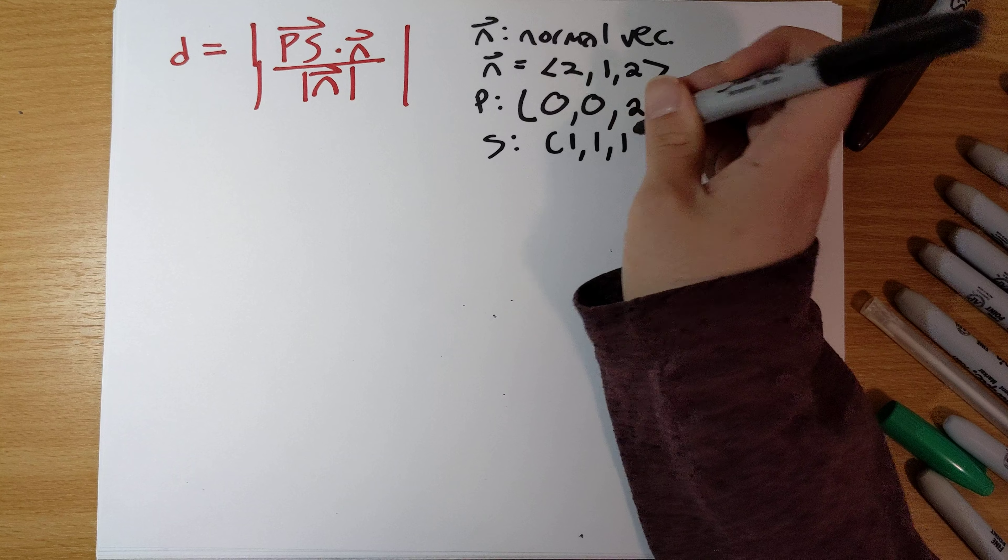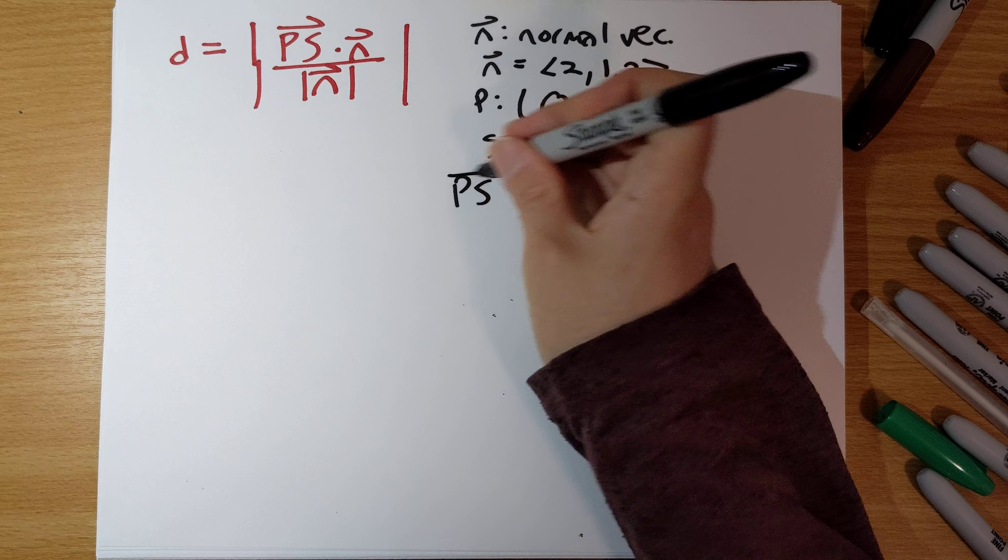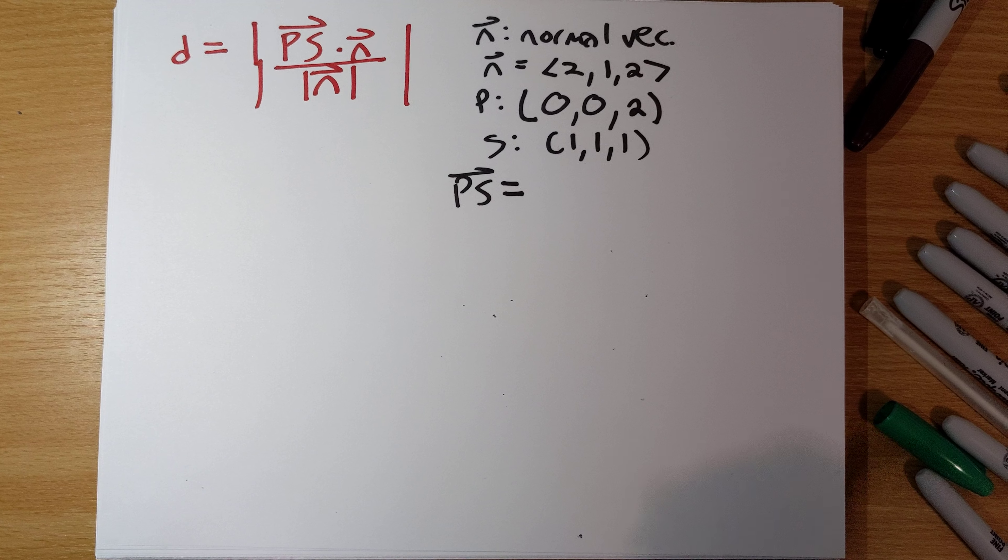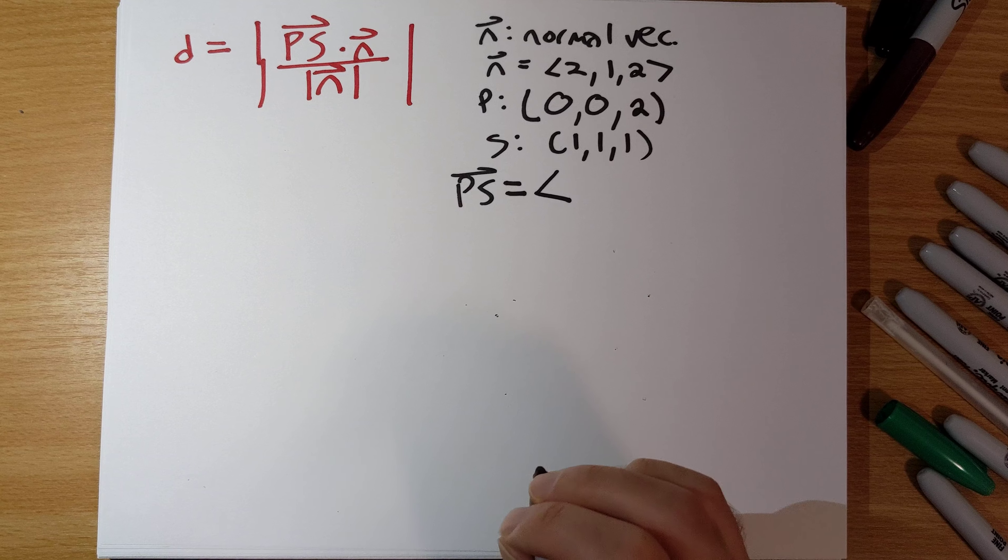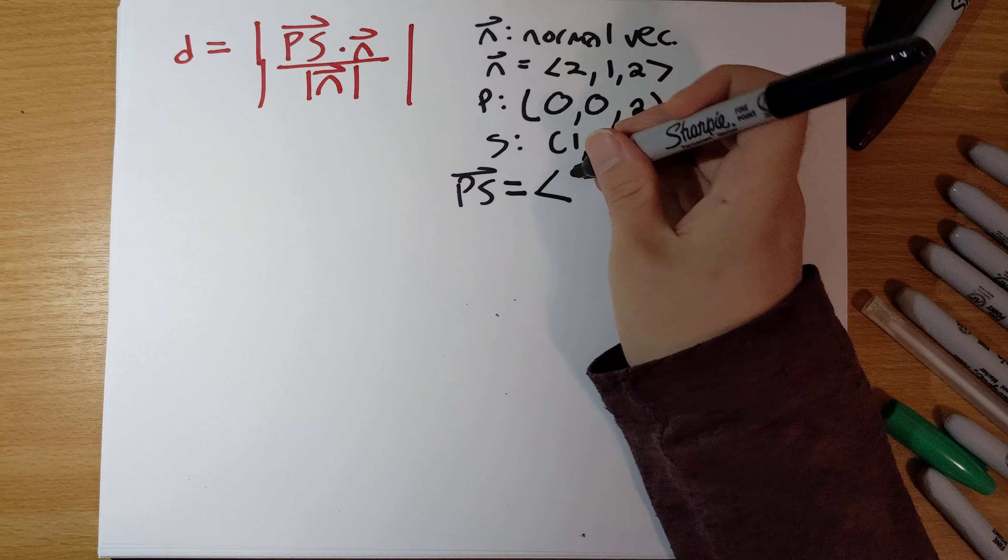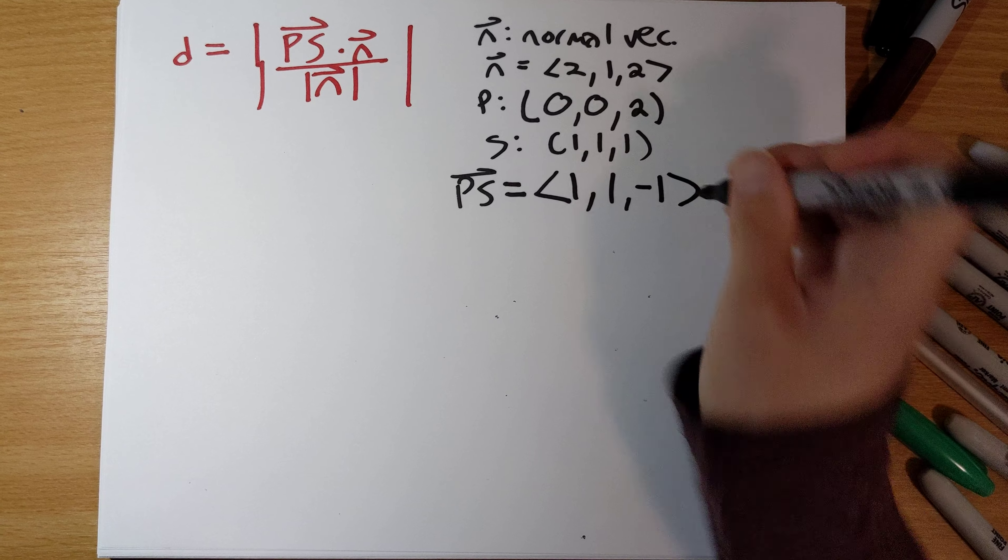Once again, s is the point 1, 1, 1. So, a vector from p to s is going to be 1, 1, and negative 1.